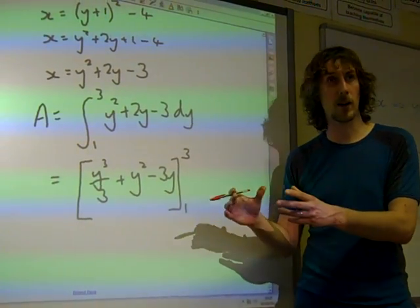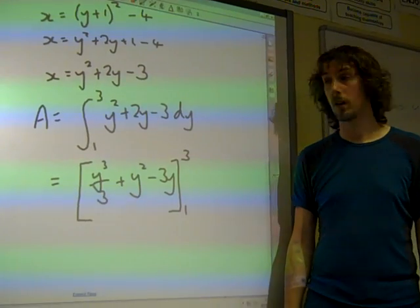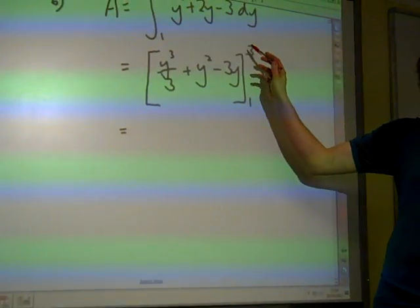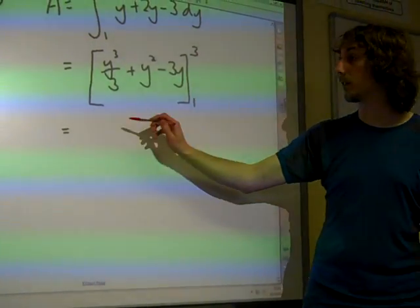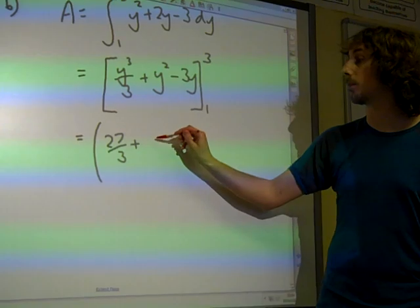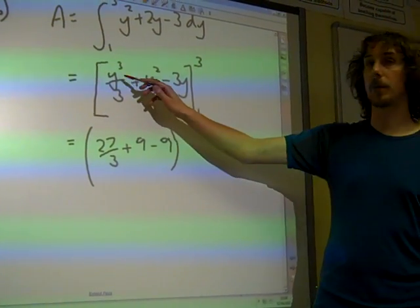We're actually getting quite a bit of credit still for just the act of integrating this. Now we start subbing the values in. We put the 3 in first, the one on the top in first. That would be 27/3 + 9 - 9. Subbing 3 into there.